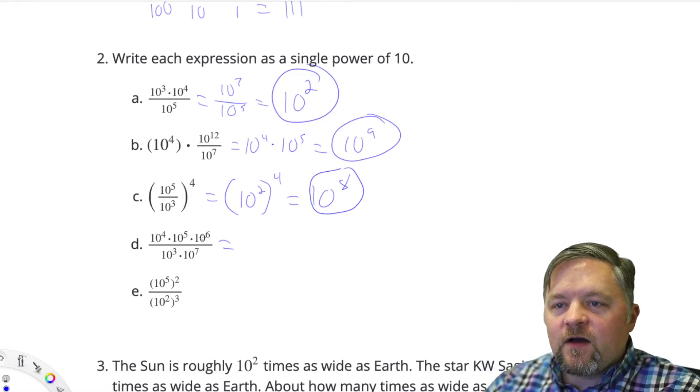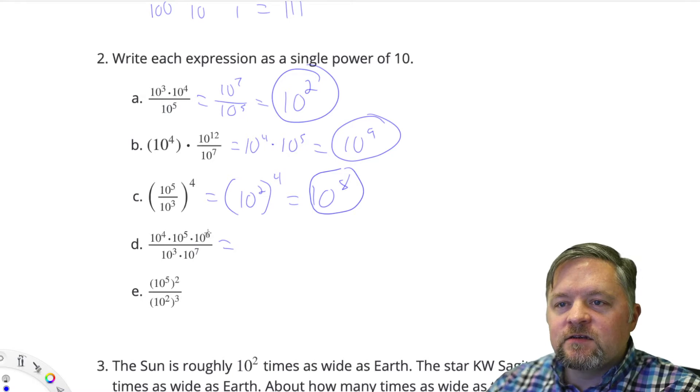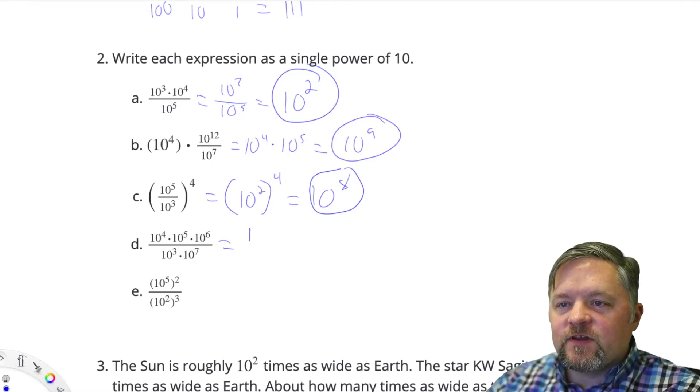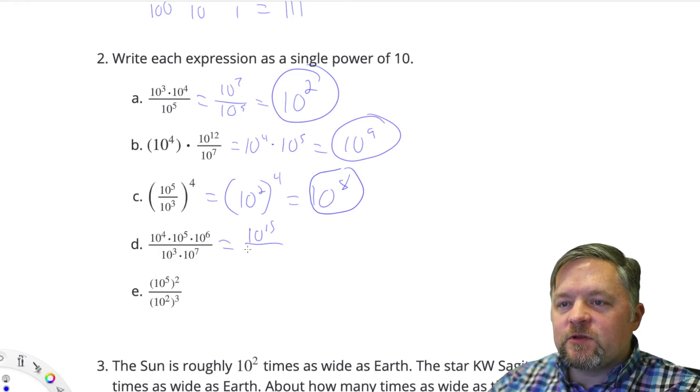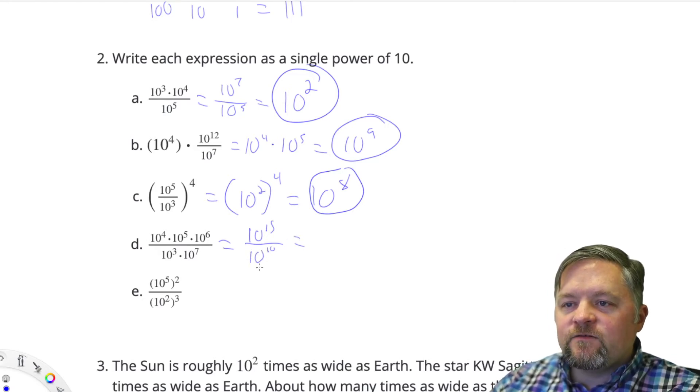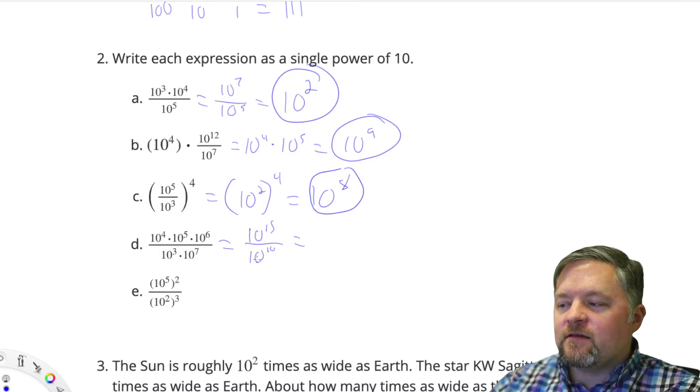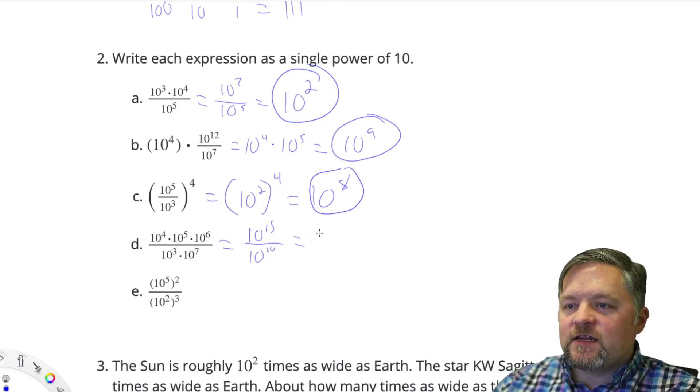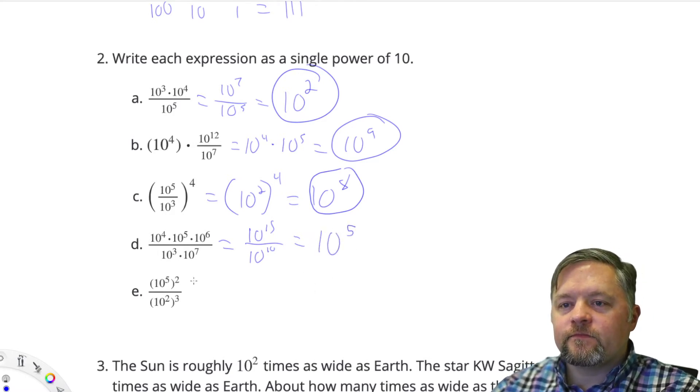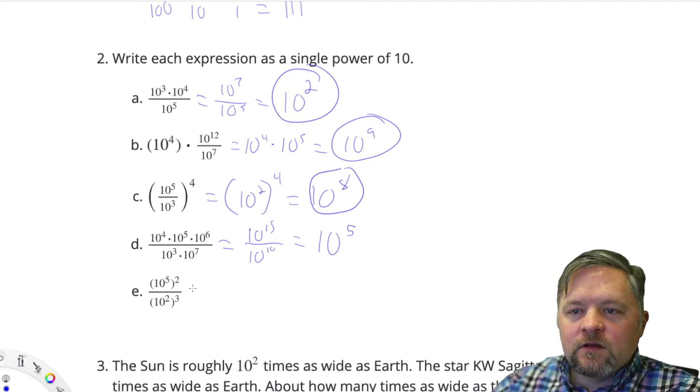10 to the 4 times 10 to the 5 times 10 to the 6. 4 plus 6 is 10 plus 5 is 15. So it's 10 to the 15 on top. 10 to the 3 times 10 to the 7. 3 plus 7 is 10. So it's 10 to the 15 divided by 10 to the 10. If we are dividing, we subtract exponents. 15 subtract 10 is 5.